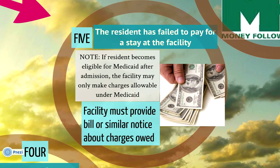The fifth situation in which discharge is appropriate is when the resident has failed to pay for a stay at the facility. Note that if a resident becomes eligible for Medicaid after admission, the facility can't charge more than what's allowable under Medicaid. A facility can't just say you failed to pay — they have to provide a bill or similar notice about charges owed.